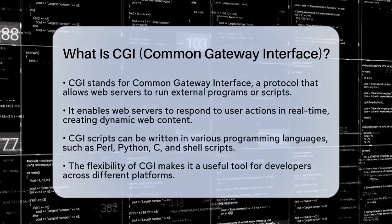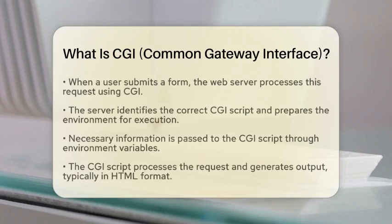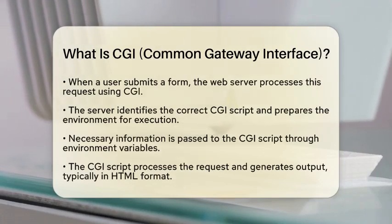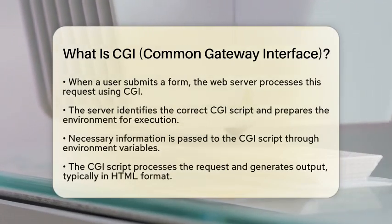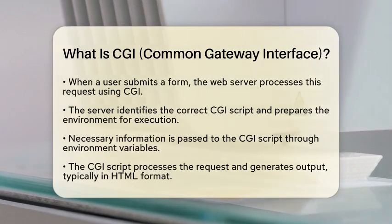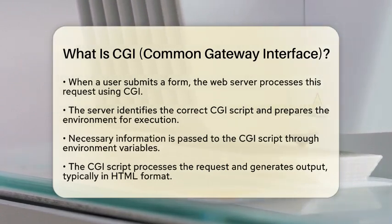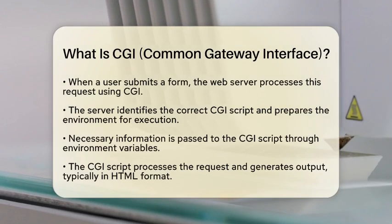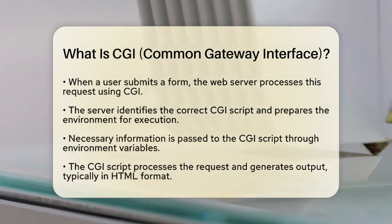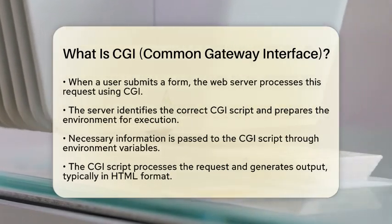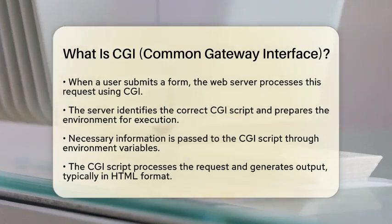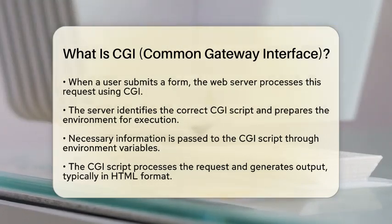So, how does CGI actually work? When a user submits a form or requests specific content, the web server recognizes that it needs to process this request using CGI. The server then locates the appropriate CGI script and sets up the environment for it, passing necessary information through environment variables.